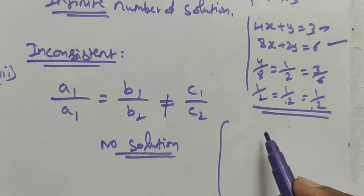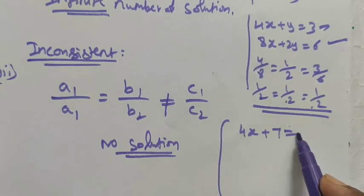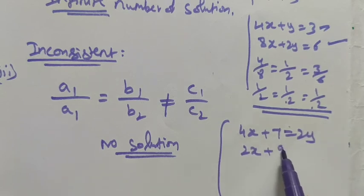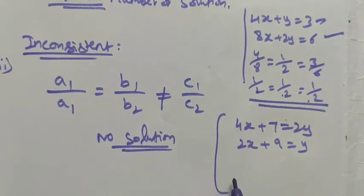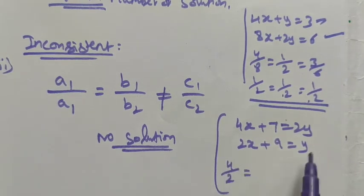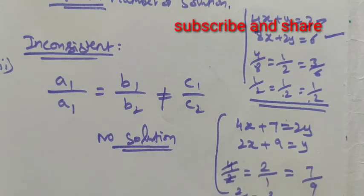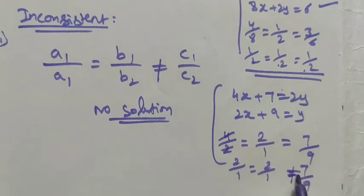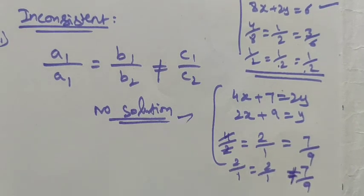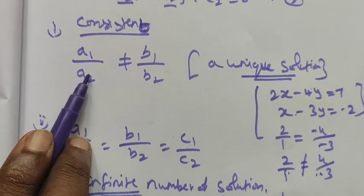For example: 4x + 7 = 2y and 2x + 9 = y. The coefficient of x gives 4/2 = 2/1, the coefficient of y gives 2/1, and the constant term gives 7/9. The ratios of x and y coefficients are equal at 2/1, but the constant term 7/9 is not equal to 2/1. So this system has no solution.